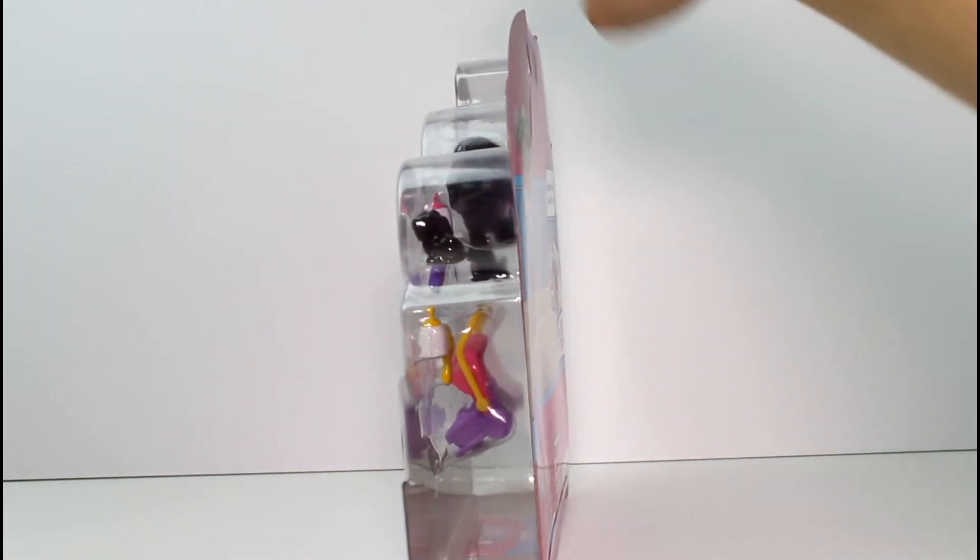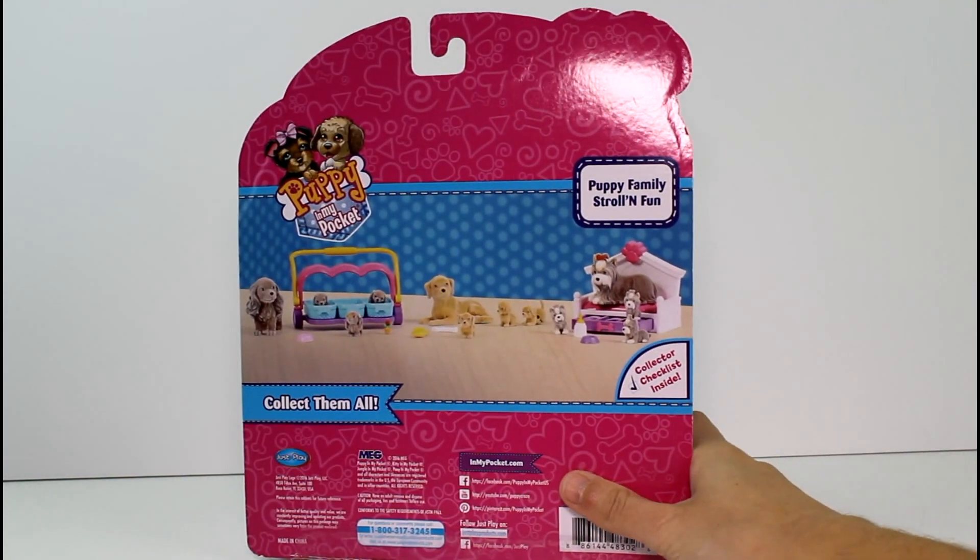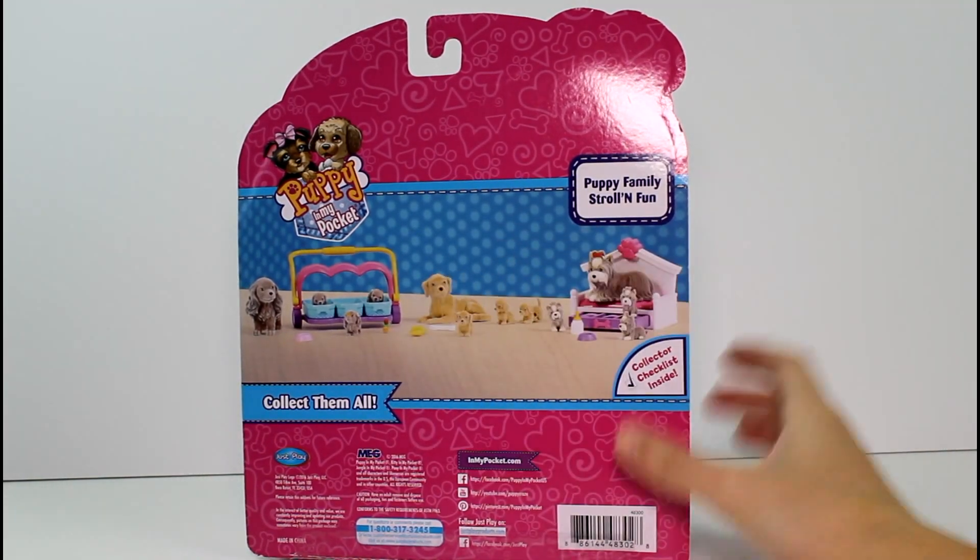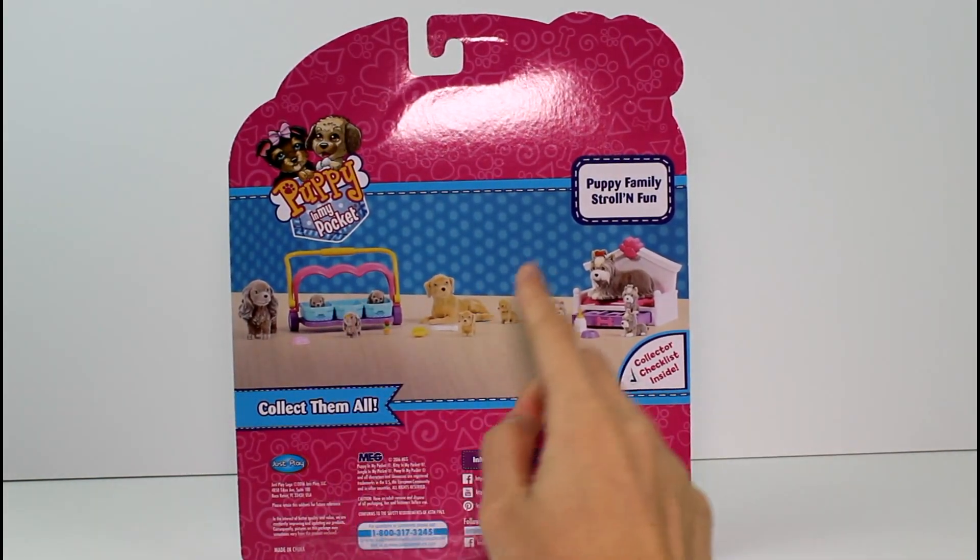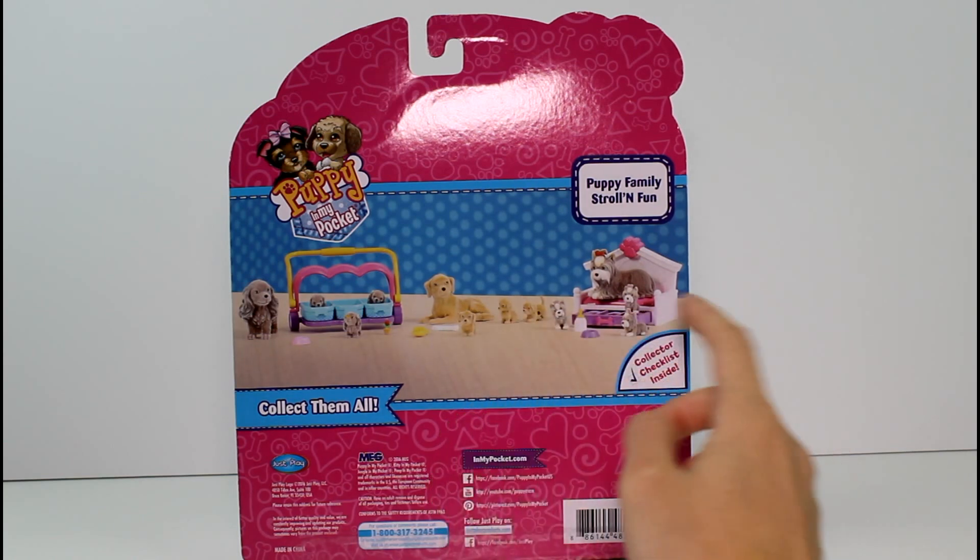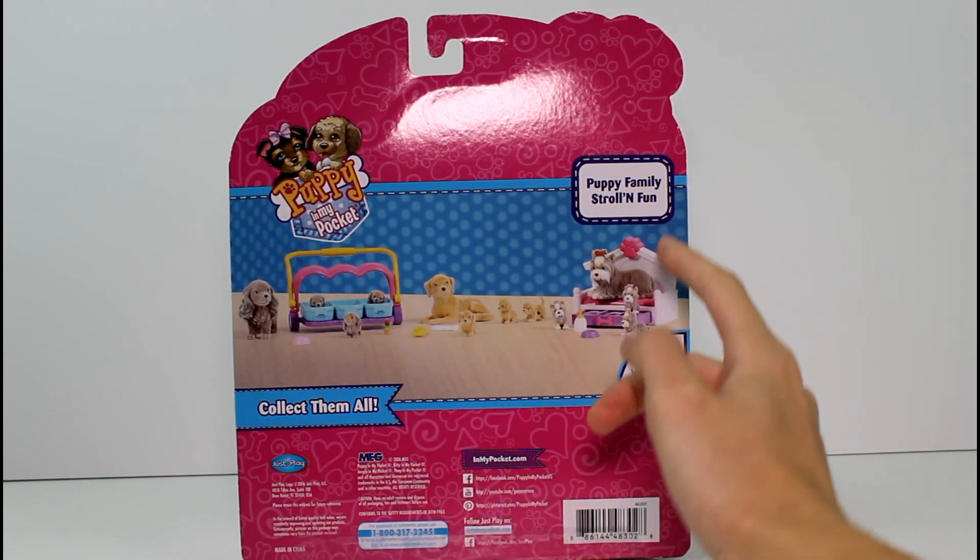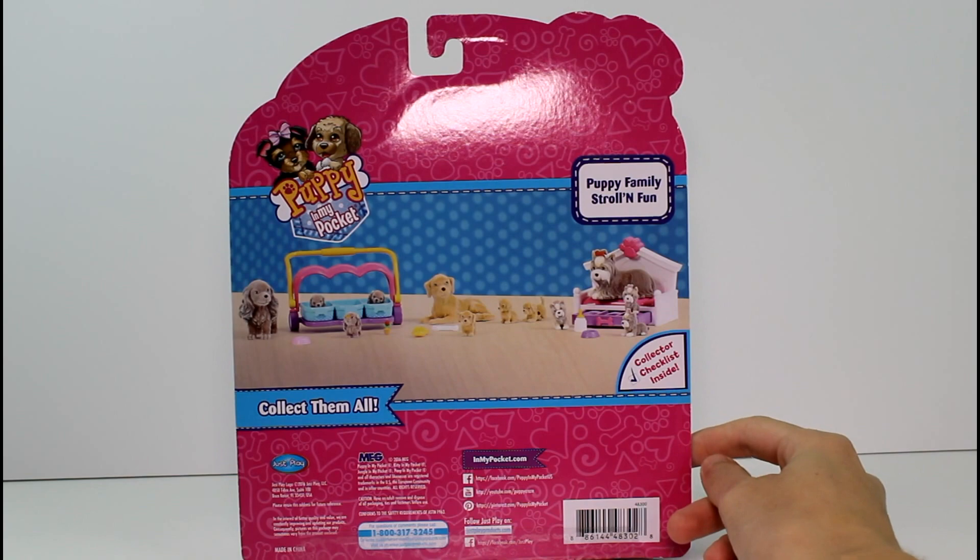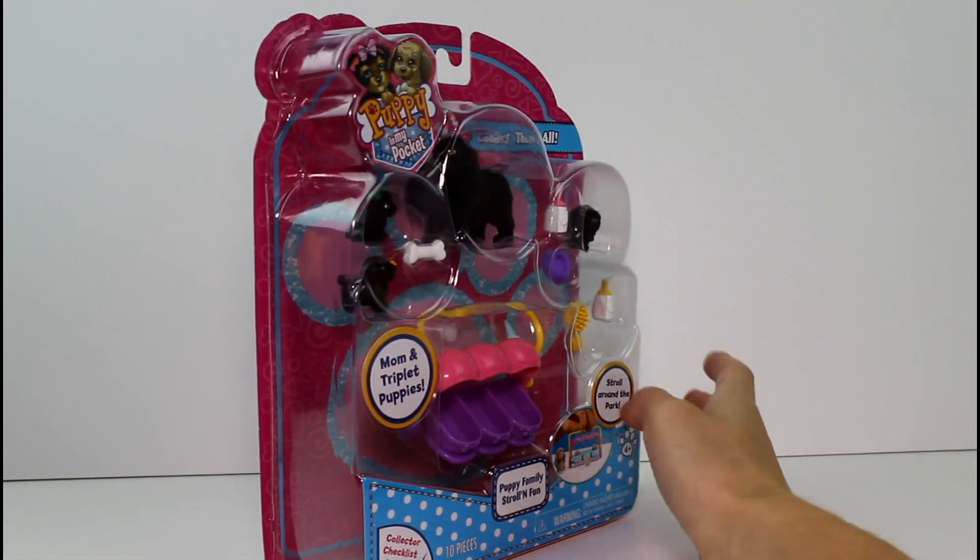They are so cute and there's three different ones you can collect, three different families anyway. So there's this family that we have here right now with the stroller. There's the Golden Retriever family I would believe and these guys with this cute adorable little bed. So we're going to be opening this one for now.